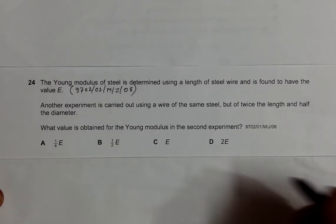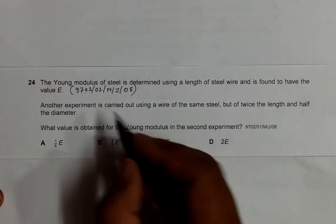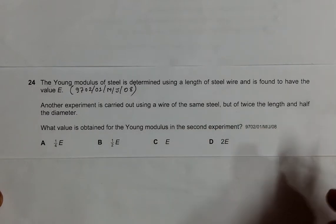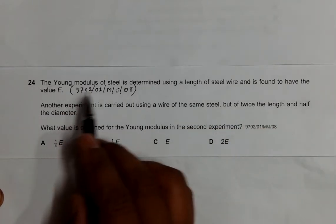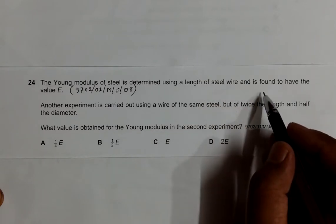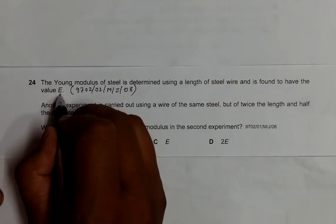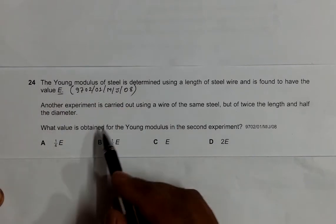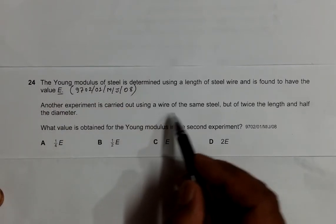Hello, this is question 24 from the 2008 May/June paper one. It says that the Young's modulus of steel is determined using a length of steel wire and is found to have the value E. Another experiment is carried out using a wire